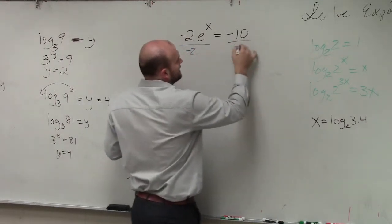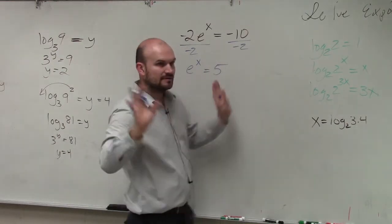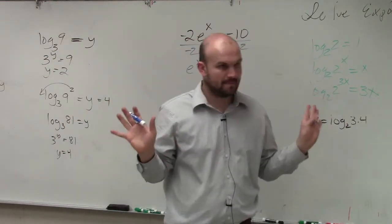So we're going to divide by negative 2. In this case, I have e to the x equals positive 5. Has everybody followed me so far? Okay.